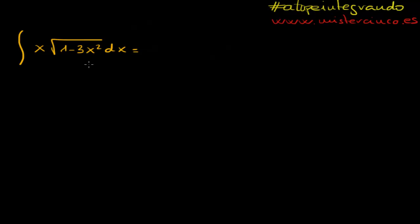well, first thing we have to realize here is that the derivative of x squared here, it's here, right, we have the x dx. So if we propose something like, let's see, 1 minus 3x squared equals to t squared, for instance,